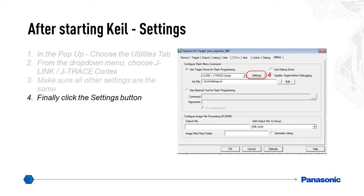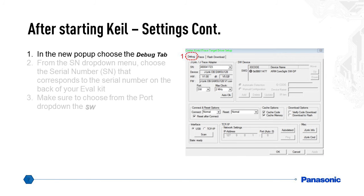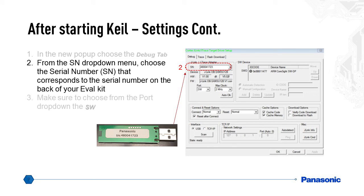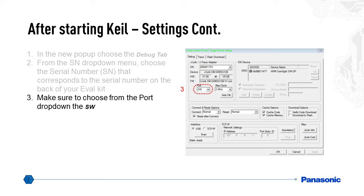Click the Settings button. A new popup will appear. In the new popup, choose the Debug tab. From the SN drop-down, choose the serial number that corresponds to the serial number on the back of your eval kit — it mostly appears as a blue sticker with Panasonic and a serial number. Make sure to choose SW from the Port drop-down, as the default is JTAG. Once done, click OK.